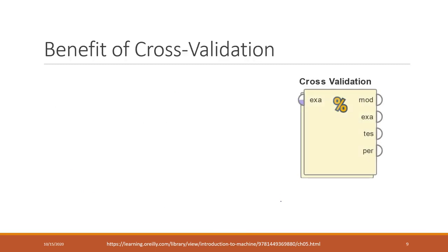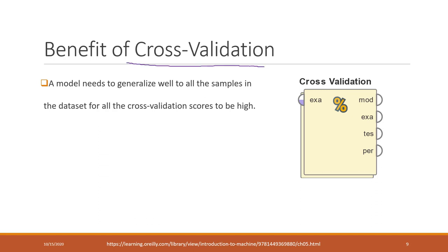The benefit of cross-validation. First of all, we will be more confident about the accuracy that we get. Because if the model wants to have a high accuracy after cross-validation, then the model has to reach high scores for all the samples in the data set. In that case, the model can reach a high accuracy.